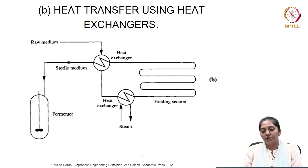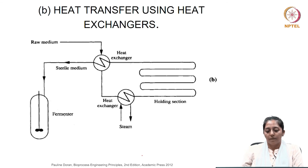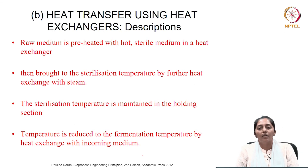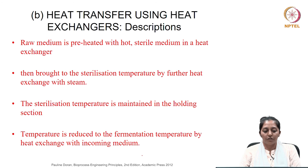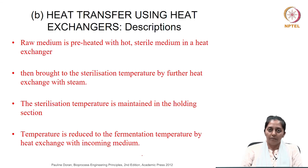The second type uses heat exchangers for the sterilization process. Rather than having direct steam sparging inside the medium, the steam exchanges heat with the medium in a heat exchanger. In this process also, the raw medium is preheated with the hot sterile medium in a heat exchanger. Then it is brought to the sterilization temperature by further heat exchange with the steam. The sterilization temperature is again maintained in the holding section, and temperature is reduced to the fermentation temperature by heat exchange with the incoming medium.